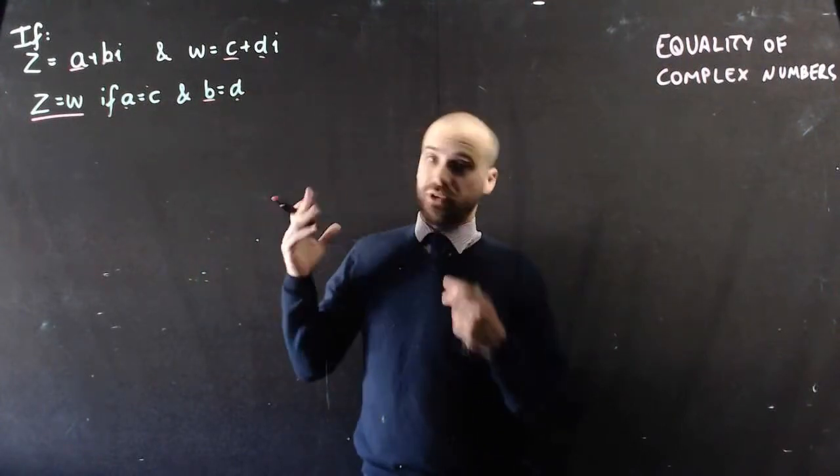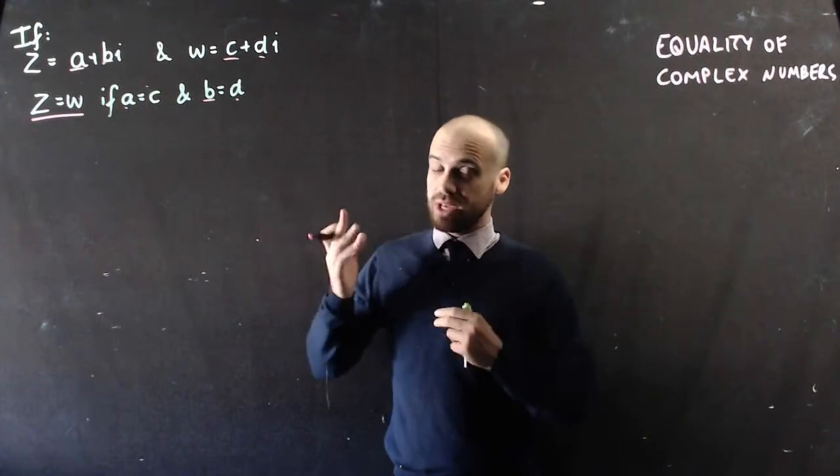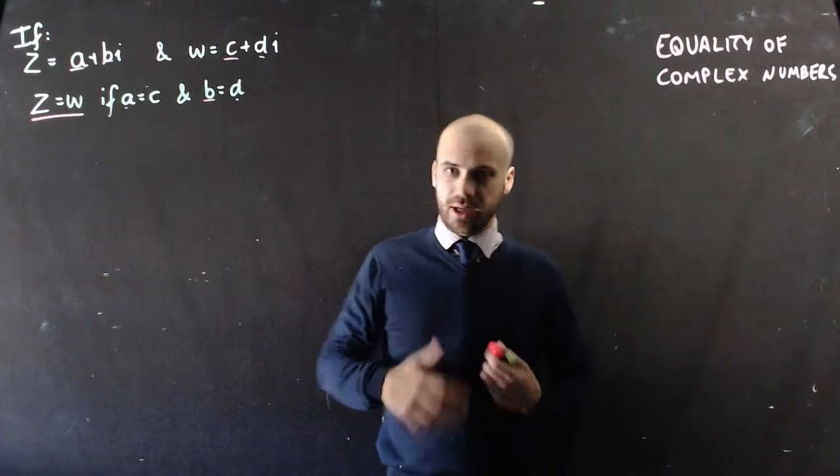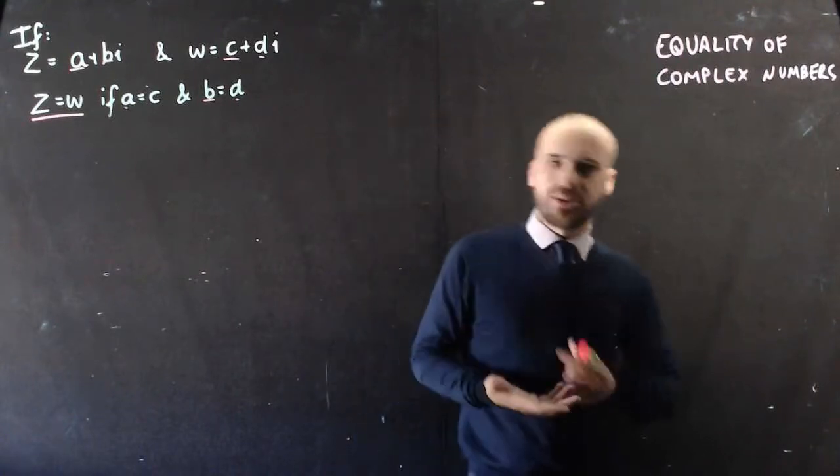Z will be equal to W if A equals C and B equals D. In other words, if two complex numbers look the same, they are the same. Super obvious, but we can probably do some fancy maths with that.